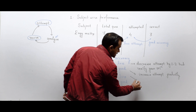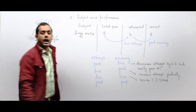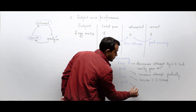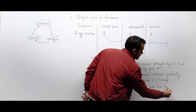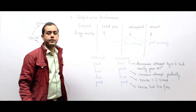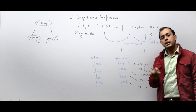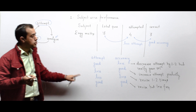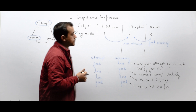If both attempt and accuracy are less, you need to revise that subject one or two times — it means you don't have sufficient knowledge. If both are good, revise but less frequently. For example, if you revise every subject twice a week, you can revise this subject once a week. You will still revise, just with less frequency, so that you don't lose your strength. This is the benefit of subject-wise analysis.